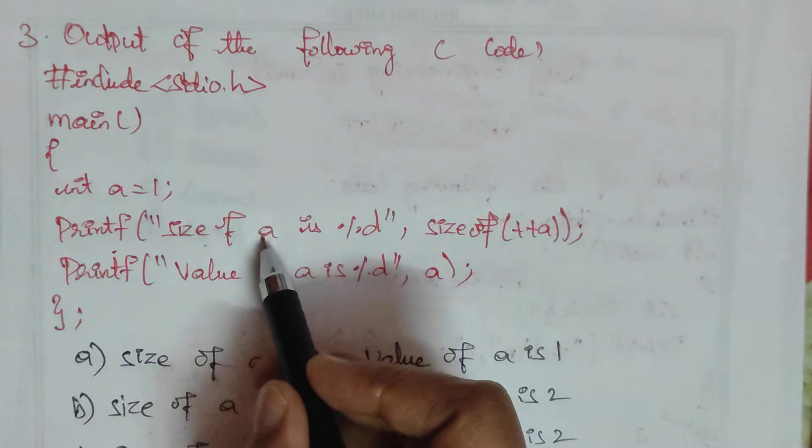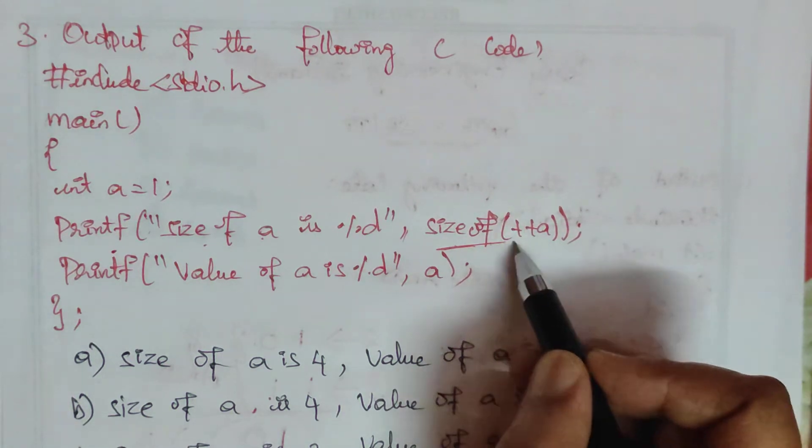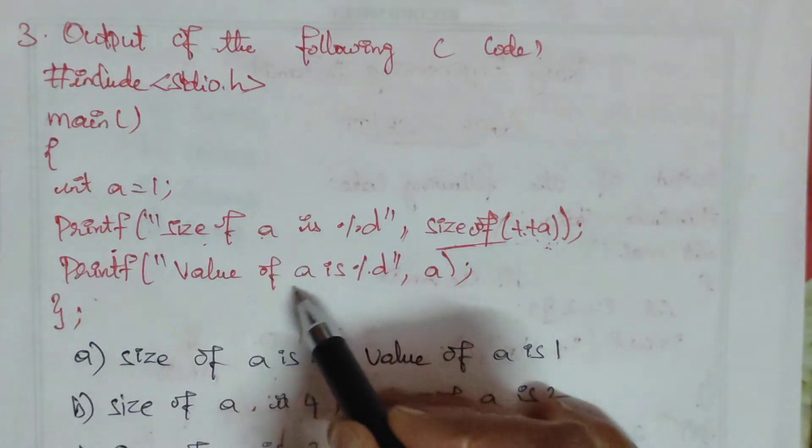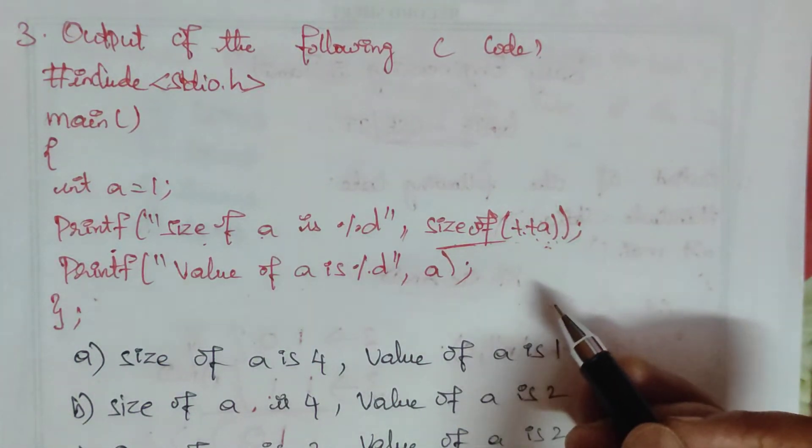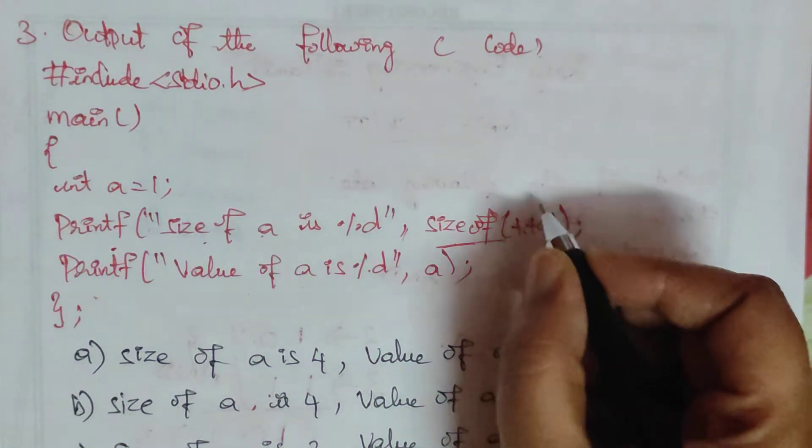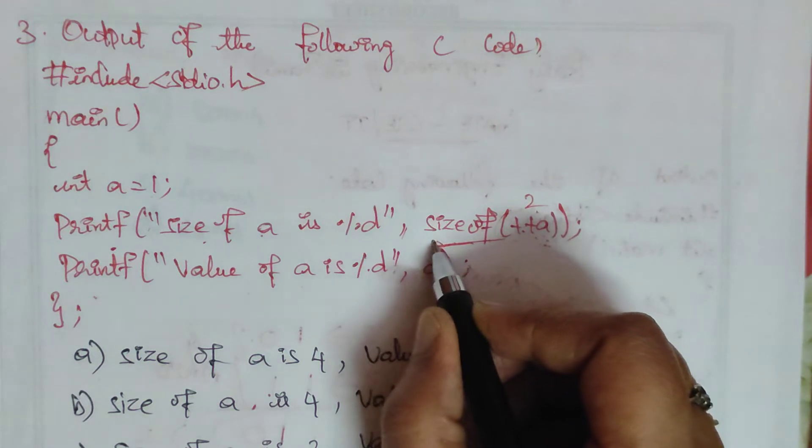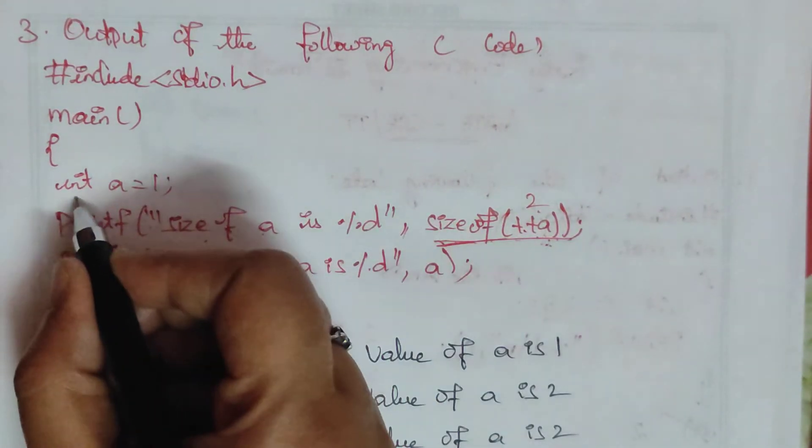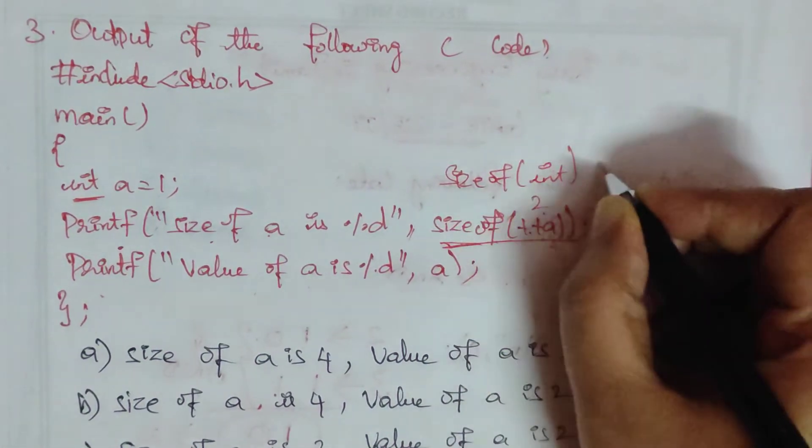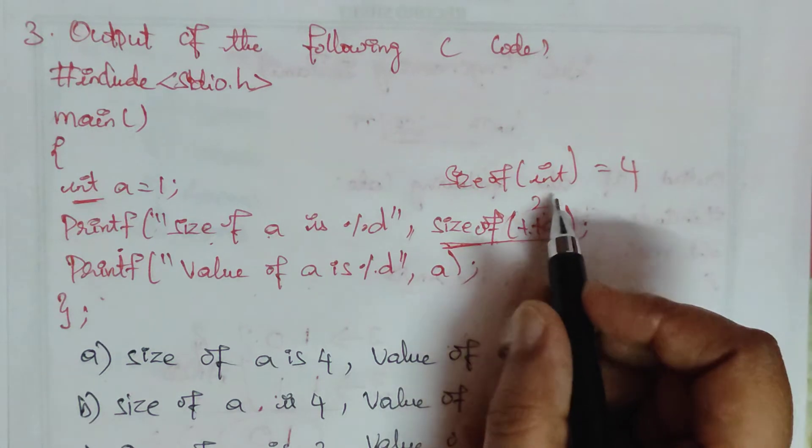Printf with size of a. Size of a function returns the size of the integer. Size of int is 4 bytes. This is the data type size. So integer size of int is 4.